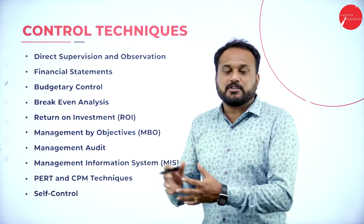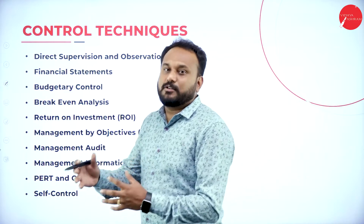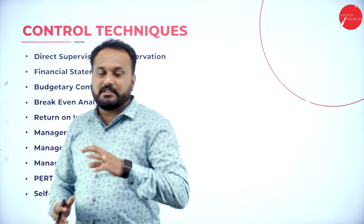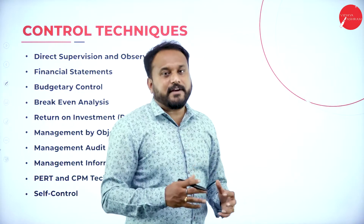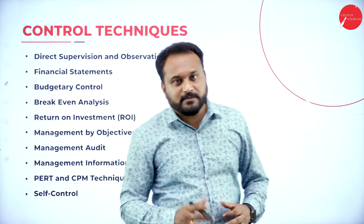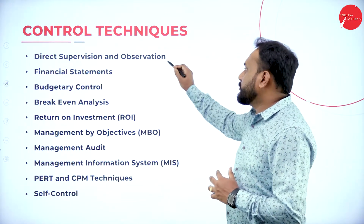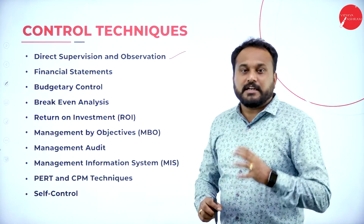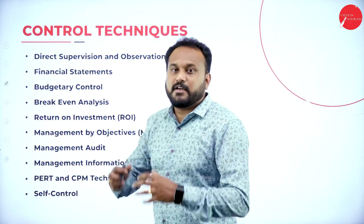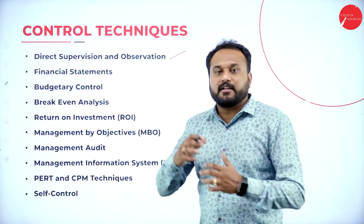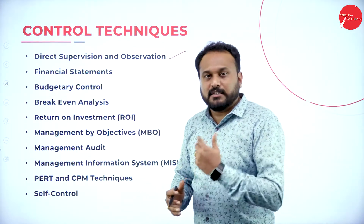Controlling is all about the comparison of actual performance with the standard performance, and if there is any deviation, we are supposed to rectify those deviations. The first technique is direct supervision and observation — it is a traditional old practice where direction is given, a supervisor is there, and he will supervise things.